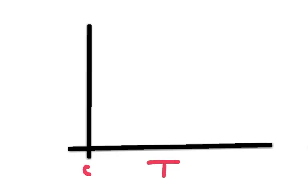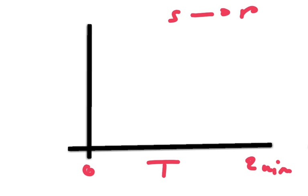Looking at the effect of substrate concentration for enzyme-controlled reactions. When we start a reaction, we add a substrate to an enzyme, and the enzyme turns it into a product by forming an enzyme-substrate complex, which reduces the activation energy, resulting in the product being formed.